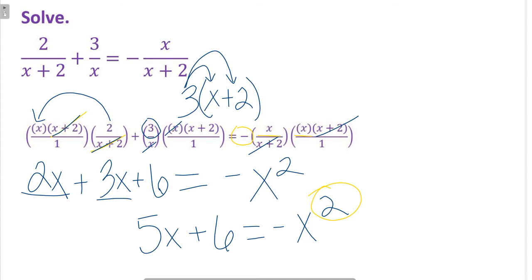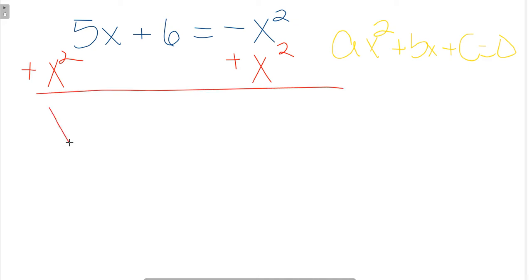What's standard form? We had 5x plus 6 equals negative x squared. We know that quadratics in standard form are ax squared plus bx plus c equals 0. So we're going to get this thing to equal 0. And we're going to do that by moving this negative x squared to the left side. How do you get something from one side of an equation to the other? You use inverse operations. So instead of negative x squared, we add x squared. That gives us x squared plus 5x plus 6 equals 0. We now have a quadratic in standard form.